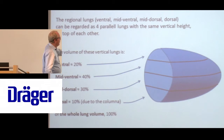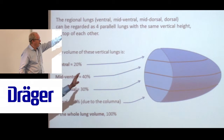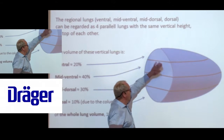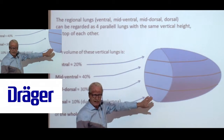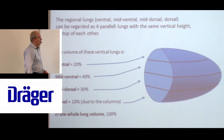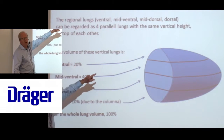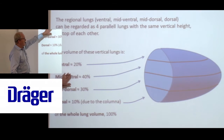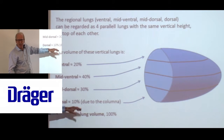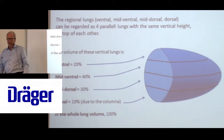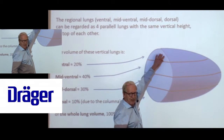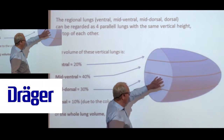We can regard the whole lung as a number of alveoli forming four parallel vertically stacked lungs: a ventral, a mid-ventral, a mid-dorsal, and a dorsal lung. The volume of the ventral lung is about 20% of the total, the mid-ventral 40%, the mid-dorsal 30%, and the dorsal is only 10% because the spine comes in. So the compliance of each part is 20%, 40%, 30%, and 10% of the total compliance, proportional to their size.